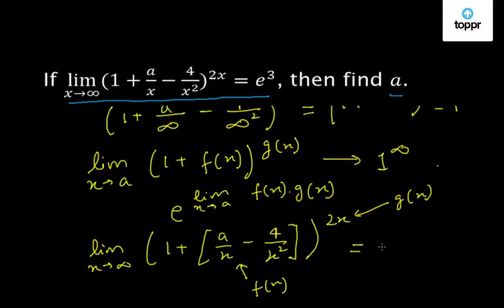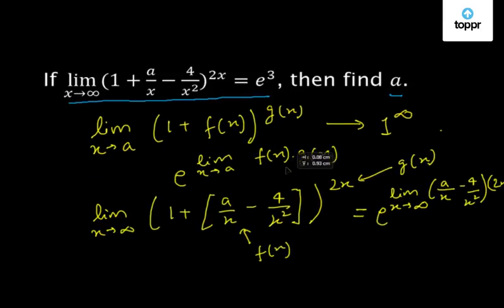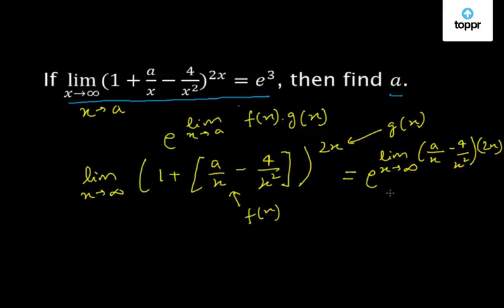This will be equal to e^[lim(x→∞) (a/x - 4/x²)×2x]. If we simplify this further, we get e^[lim(x→∞) (2a - 8/x)].